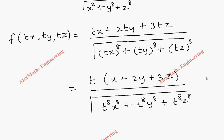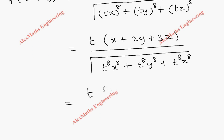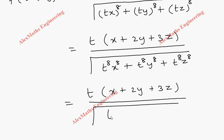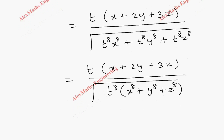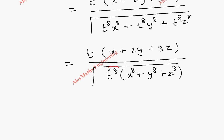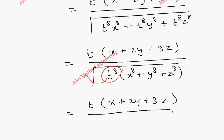In the denominator, we can take t power 8 common from each term inside the square root, leaving x power 8 plus y power 8 plus z power 8. When we take t power 8 outside the square root it becomes t power 4. So we already have t in the numerator and t power 4 in the denominator, with the remaining terms x power 8 plus y power 8 plus z power 8.